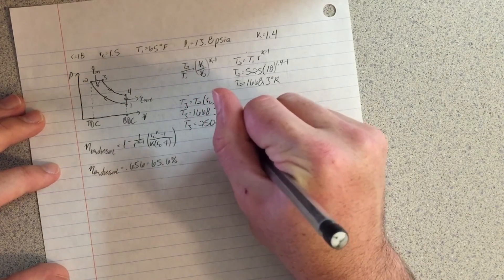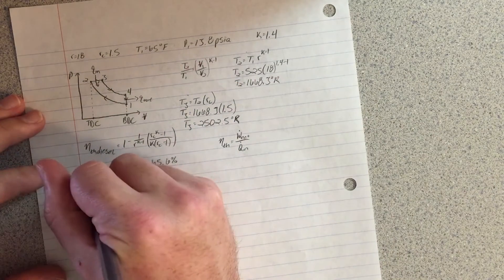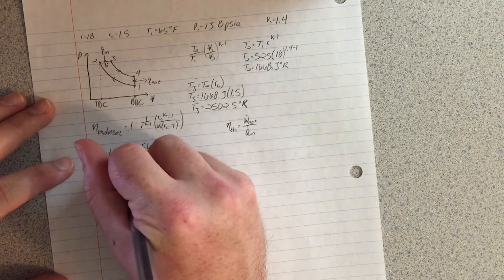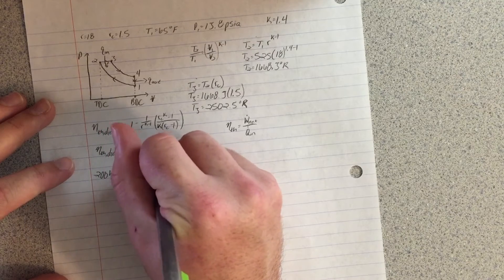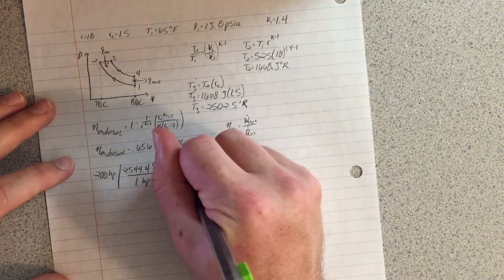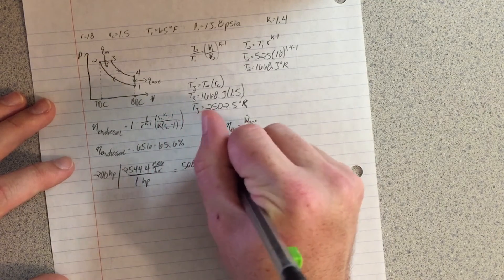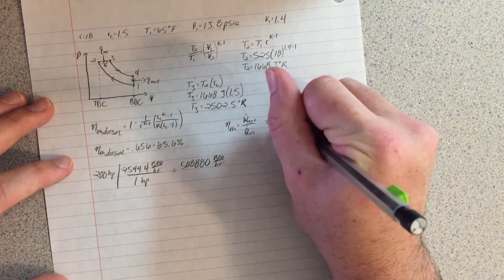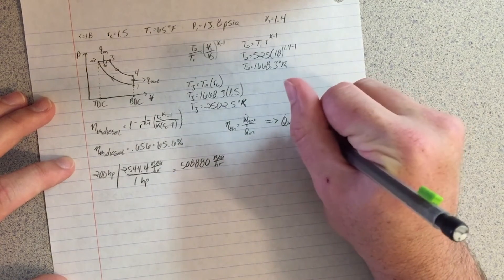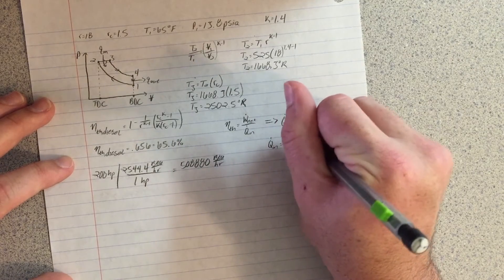Finally, to find the rate of heat addition to the cycle, we will use the equation Eta TH equals W dot net divided by Q dot in, where W dot net is the power produced by the cycle and Q dot in is the rate of heat addition. Solving this equation for Q dot in, we get that Q dot in equals W dot net divided by Eta TH, which will allow us to solve for the desired value for the rate of heat addition.